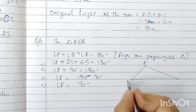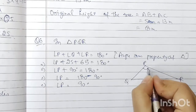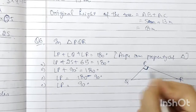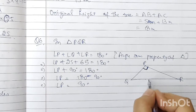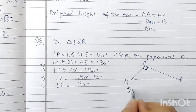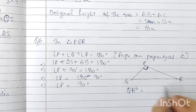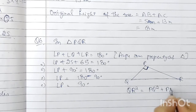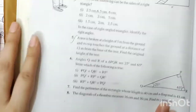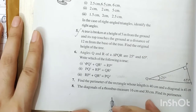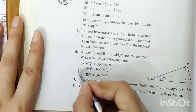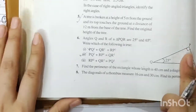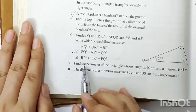In triangle PQR with angle P = 90 degrees, the side opposite to 90 degrees is the hypotenuse, which is QR. By Pythagoras theorem, QR² equals the sum of squares of the other two sides. So QR² = PQ² + PR². Therefore the second option is the answer.